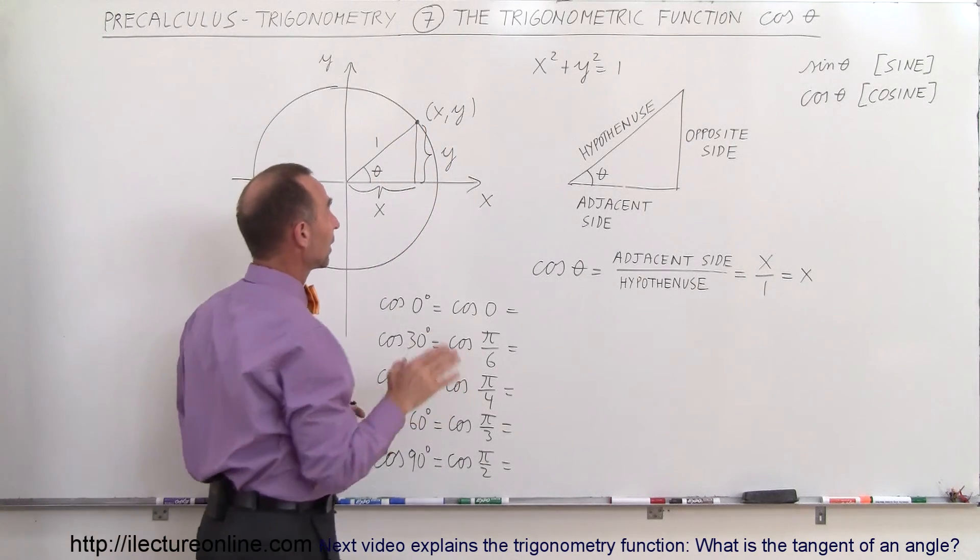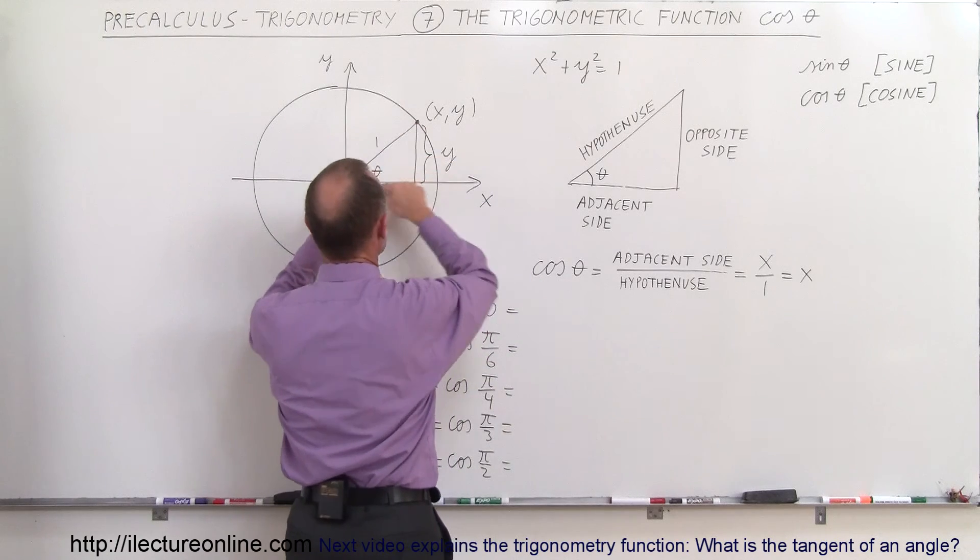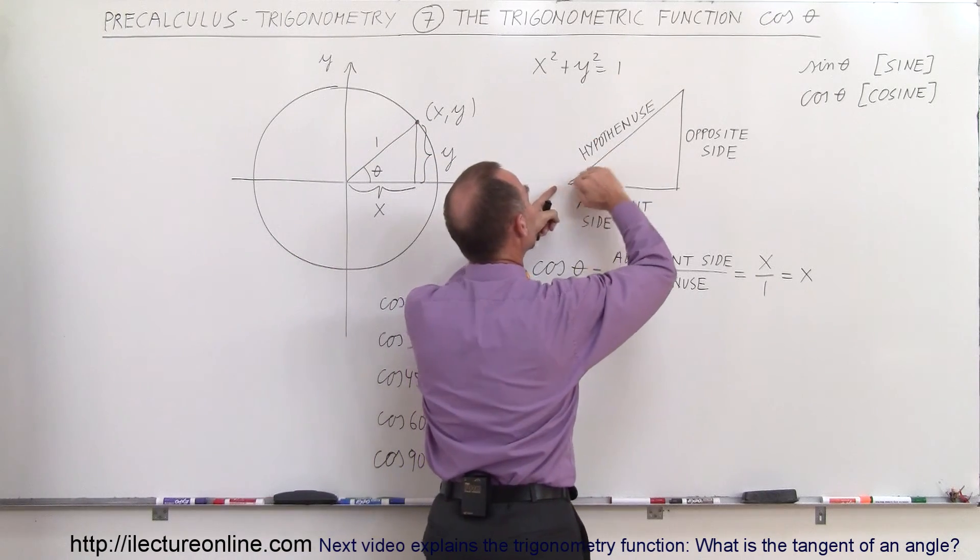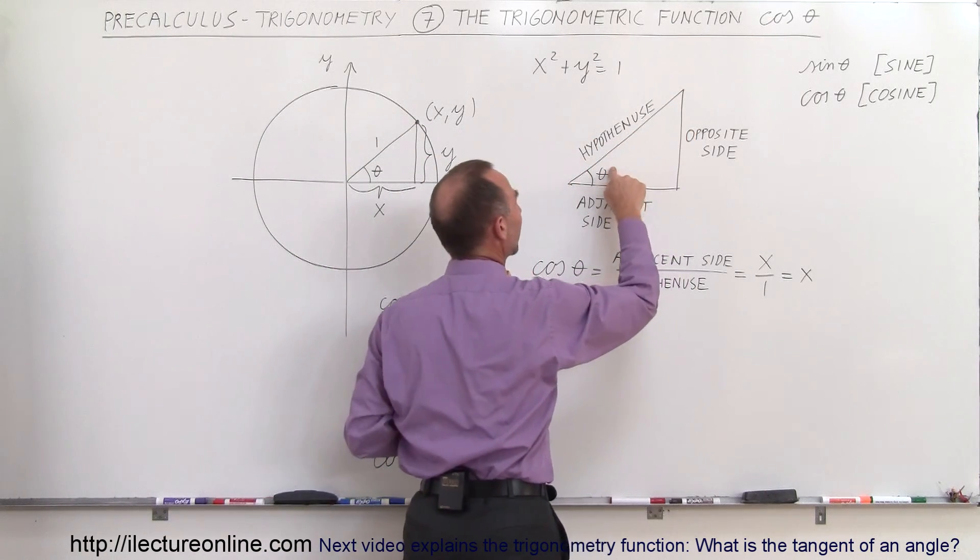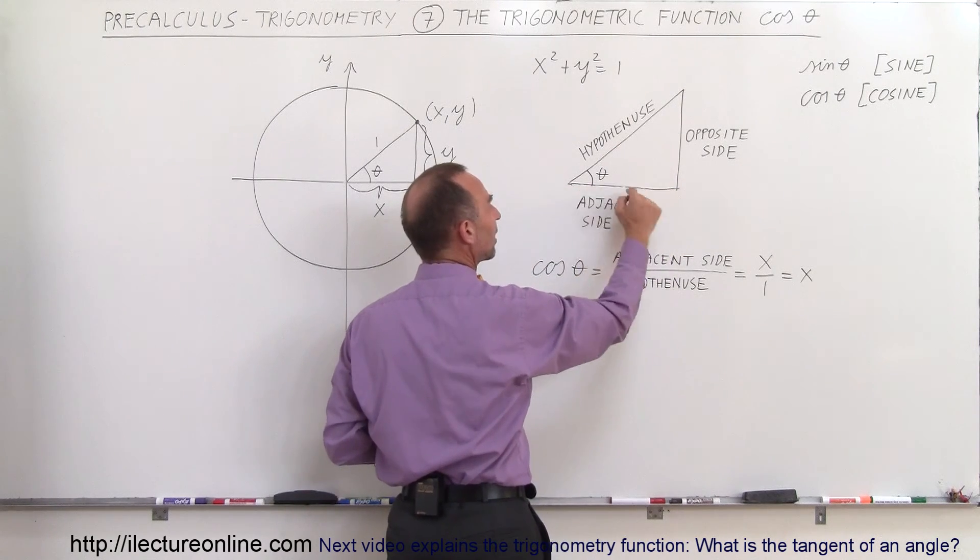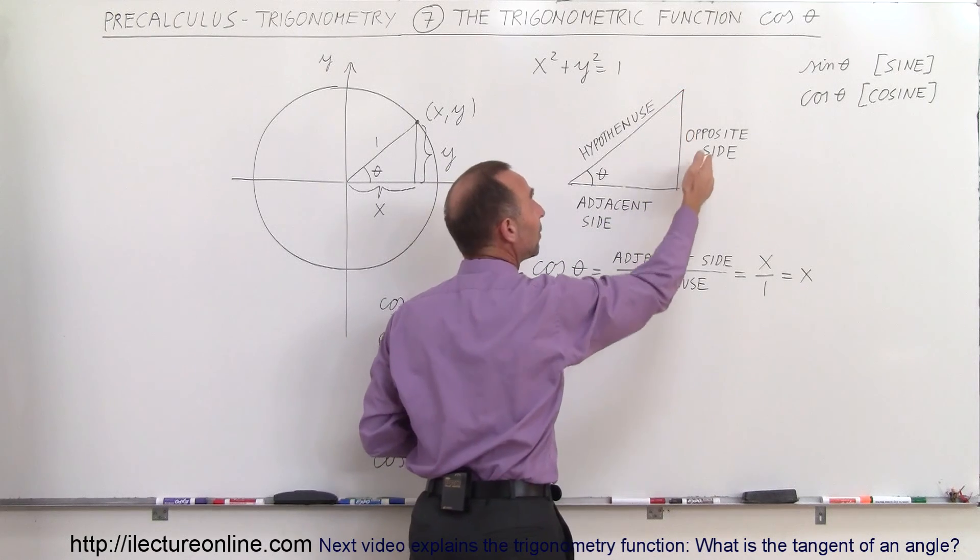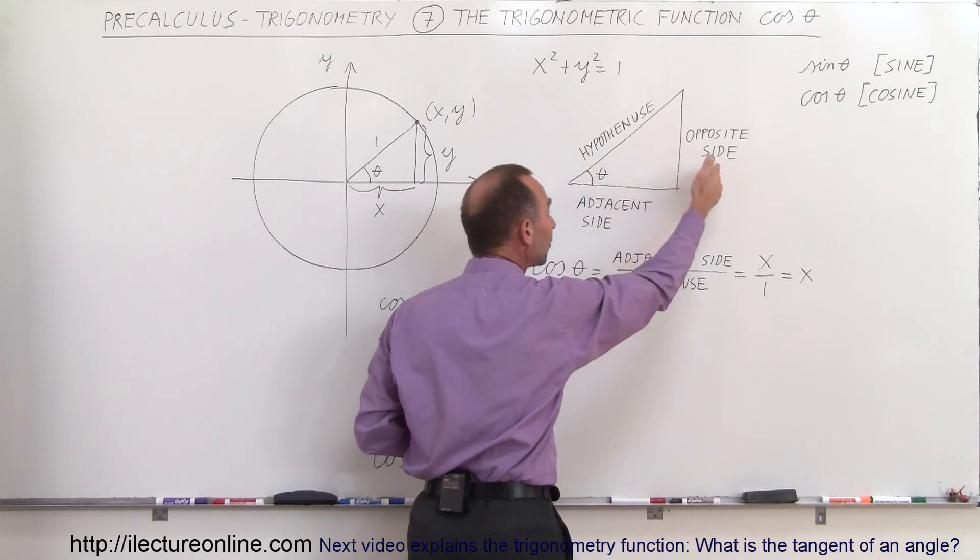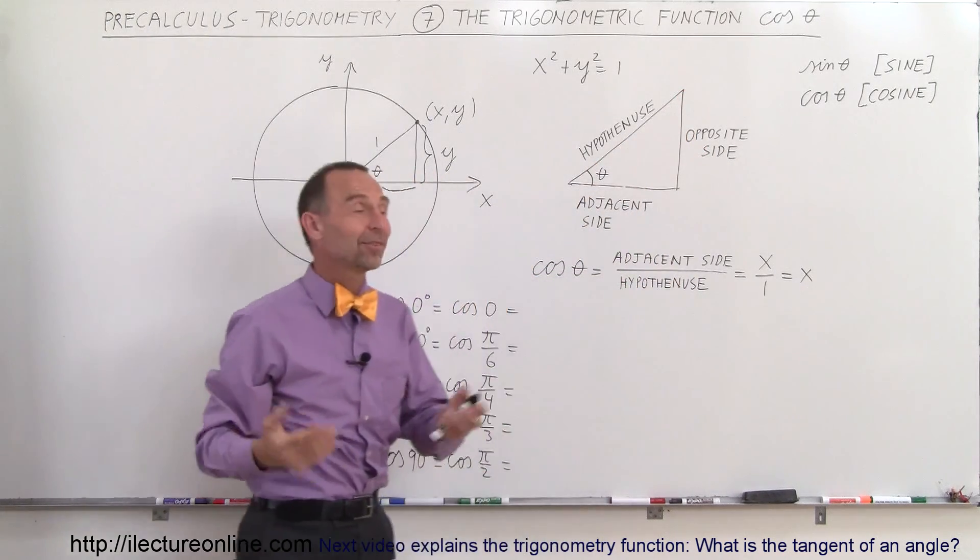And so the definition can be found by taking the very same triangle, drawing it over there. This is known as the hypotenuse, there's the angle theta, this is known as the adjacent side to the angle because the side here touches the angle, this is known as the opposite side because the side is opposite to the angle.